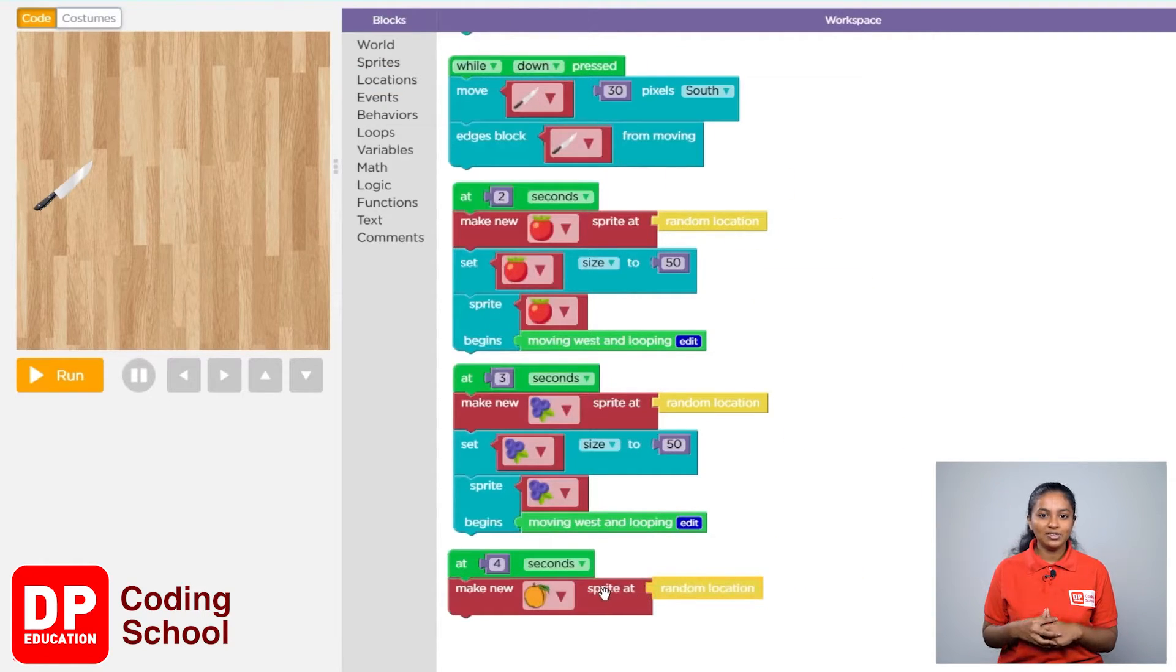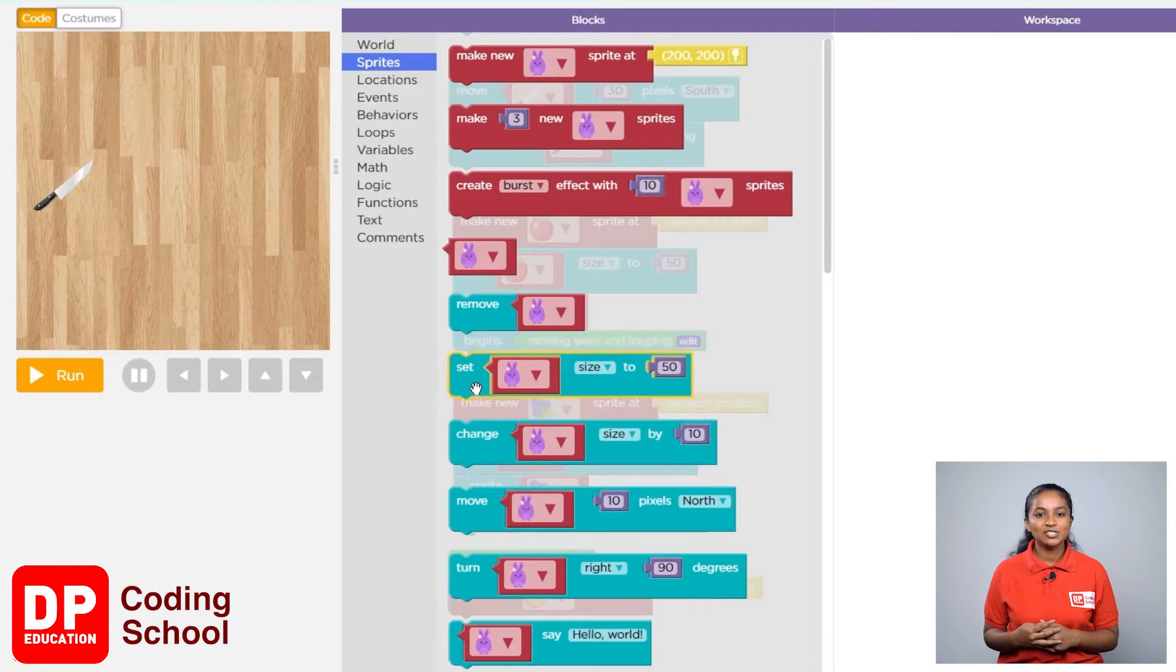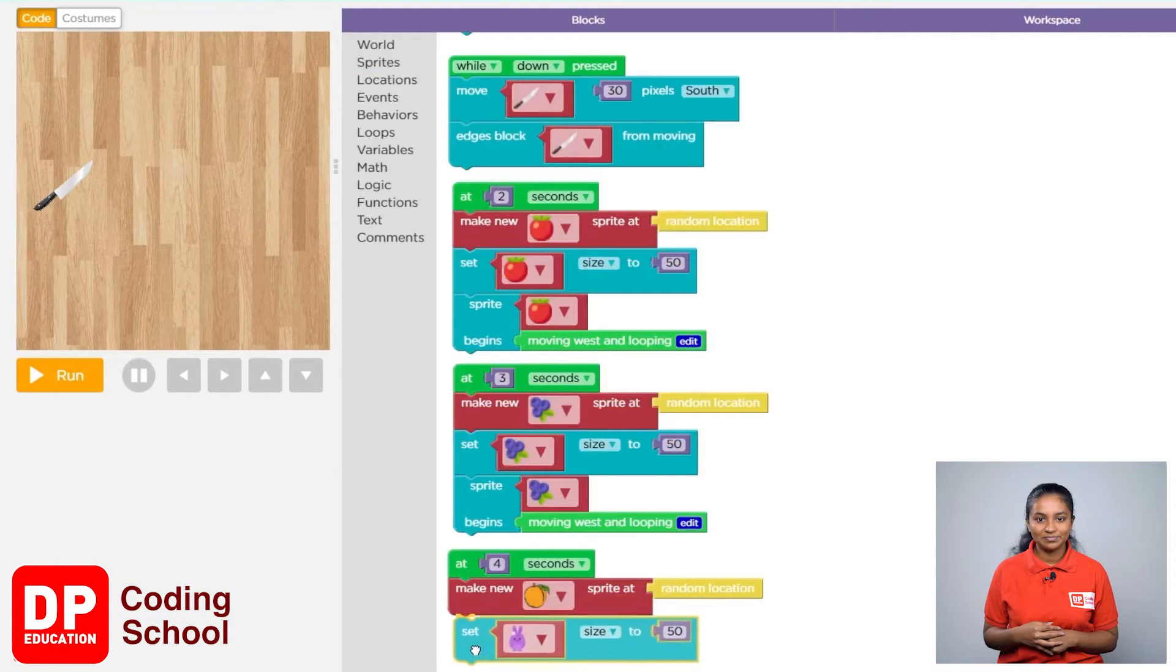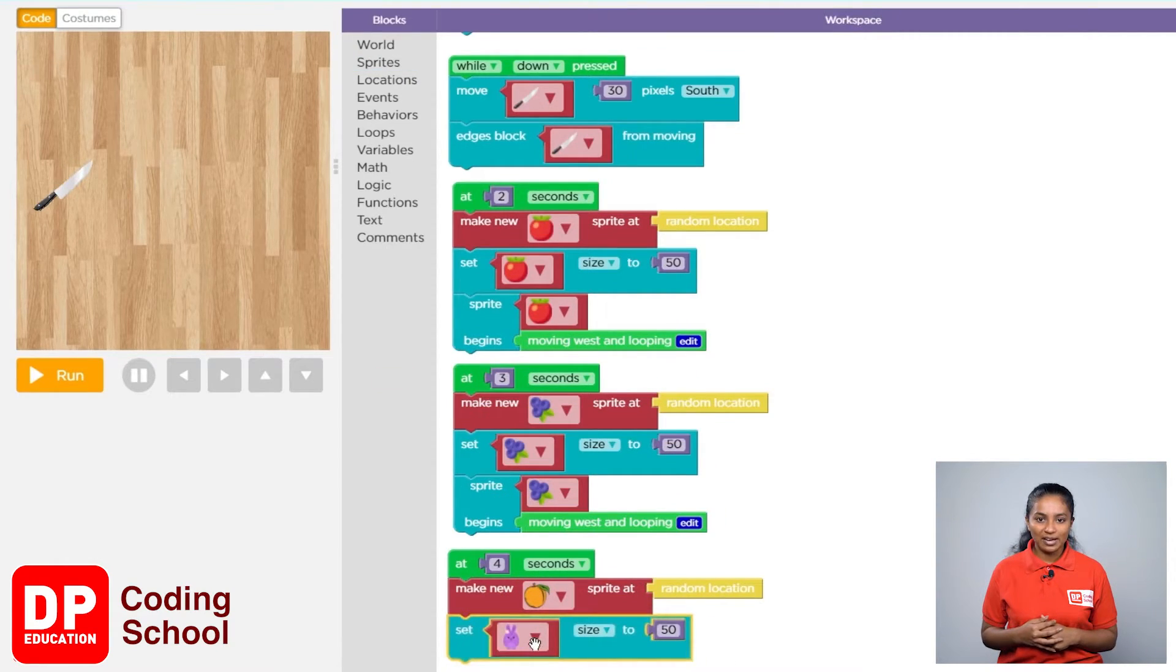Now we need to reduce the size of these oranges. For that I clicked on sprites. Now drag the set size 2 block like this. Click the small arrow and choose the orange. Here let's type 50.